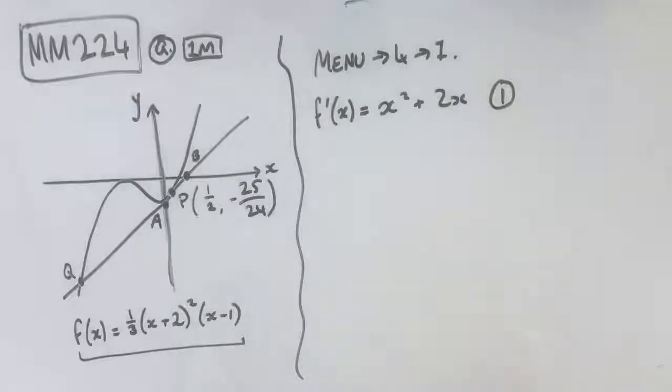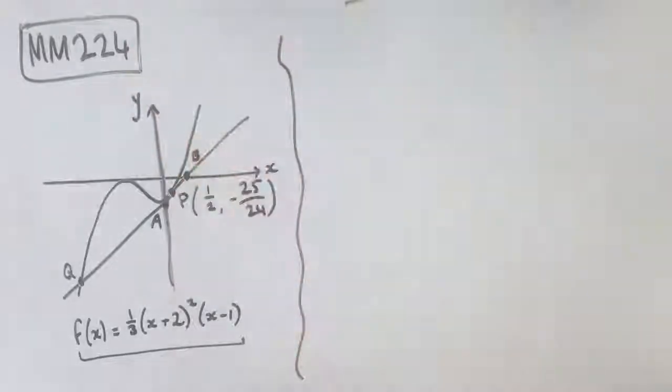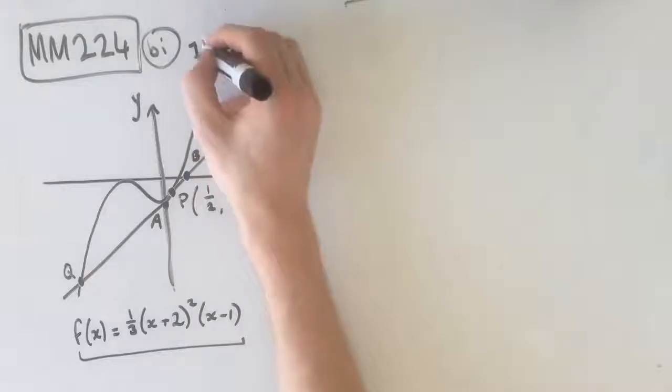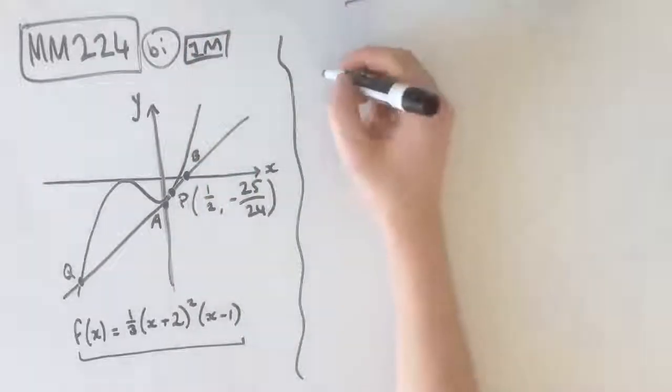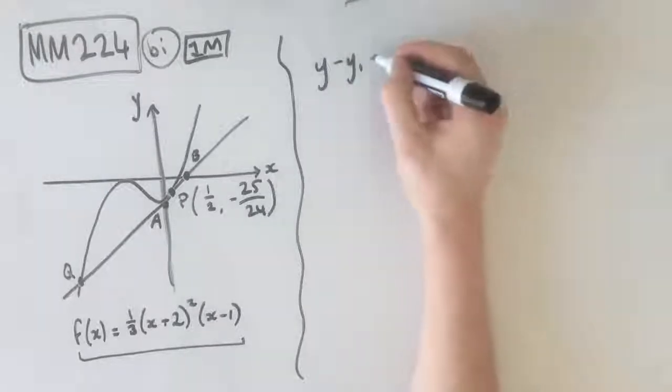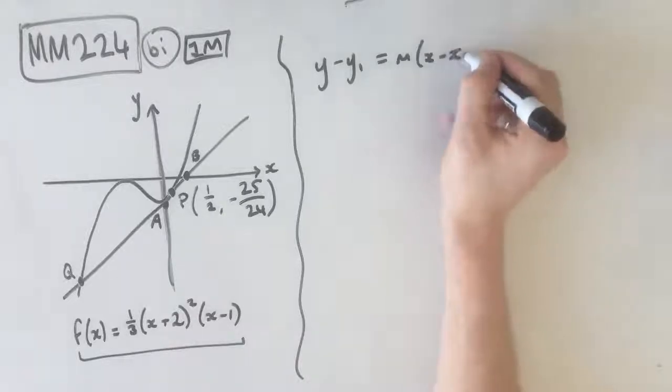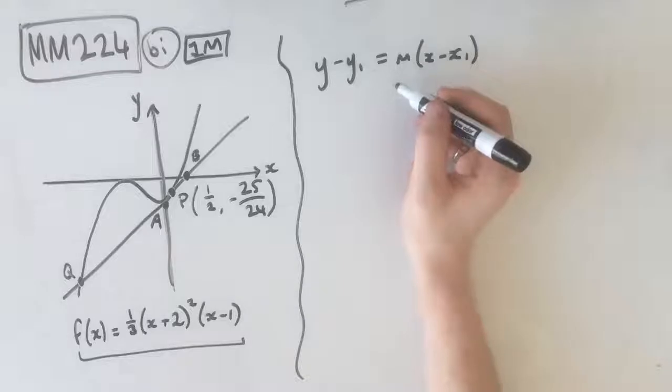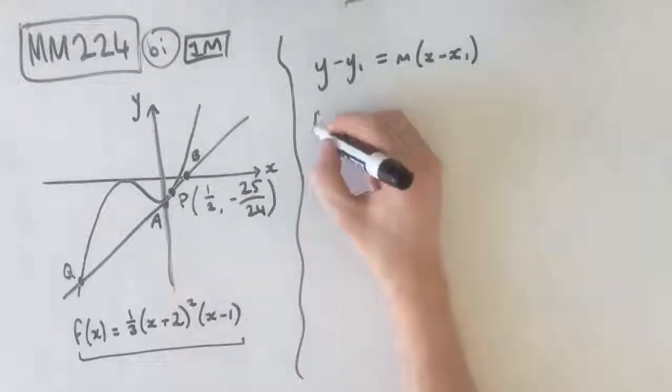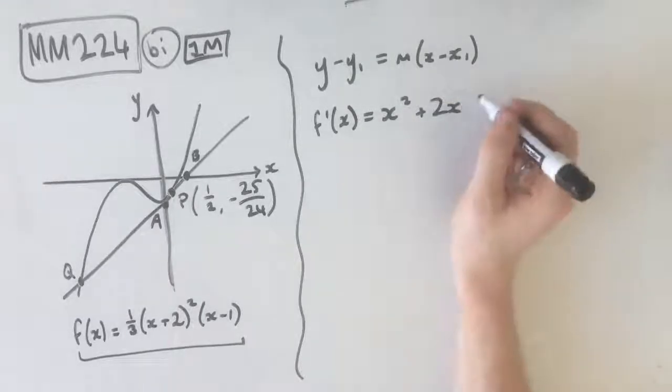Let's move on to part B.i. Part B.i asks us to find the equation of the tangent to the graph of f at point P. B.i is one mark worth. We know that a tangent is a linear graph, which means that our equation is going to follow the function y - y₁ = m(x - x₁). First things first, whenever we're trying to find the equation of a tangent, we need to find the gradient at that point.